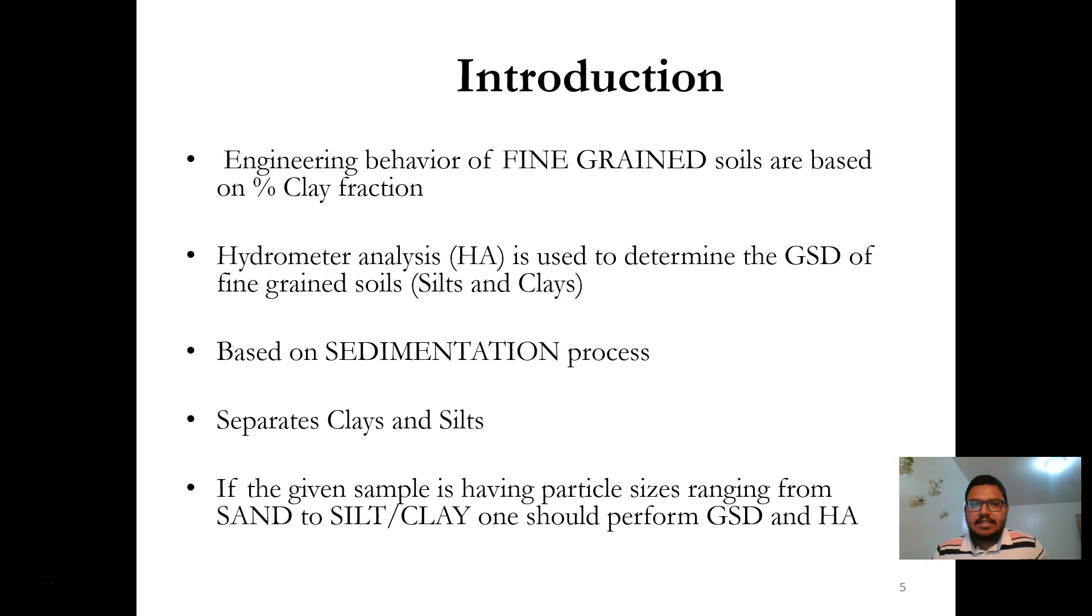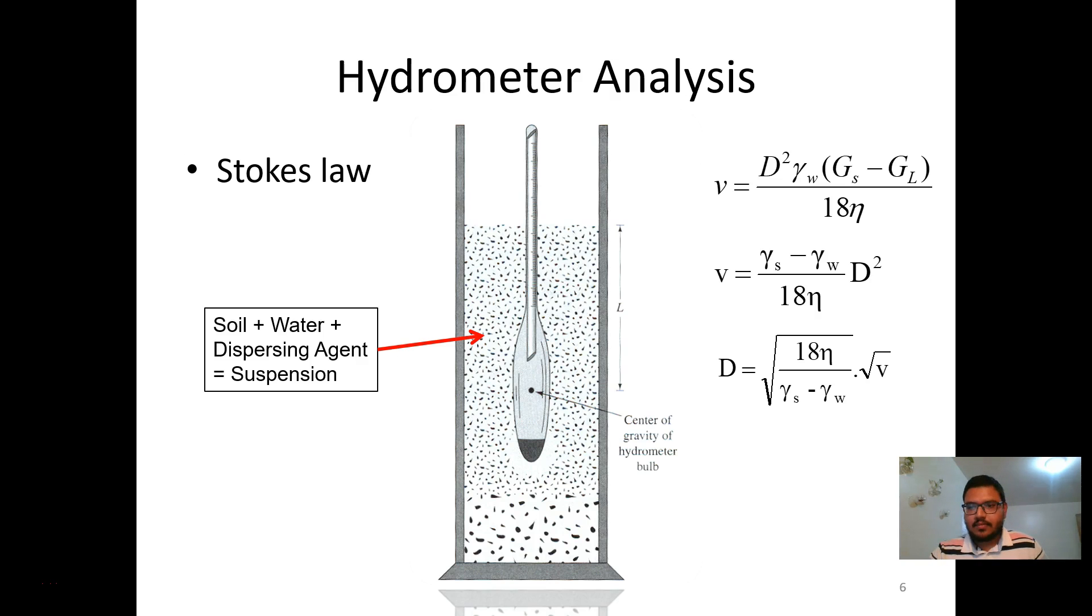Hydrometer analysis is based on sedimentation process. This method can determine the grain size of both silt and clay particles. The hydrometer analysis is developed based on Stokes law. Suspended soil particles will fall to the bottom due to gravity. The greater the grain size, the greater its settling velocity in a fluid. The time required to reach the bottom depends on the terminal velocity of that soil particle. This terminal velocity can be determined by the following equation given by Stokes.